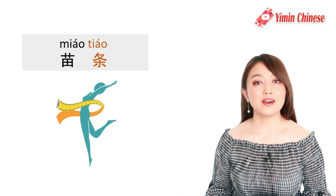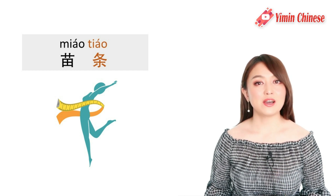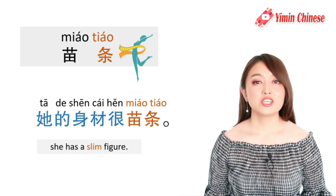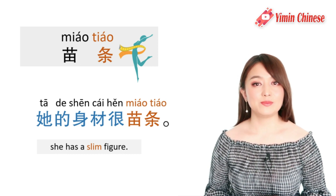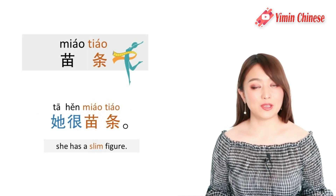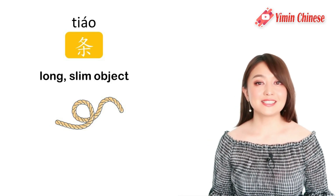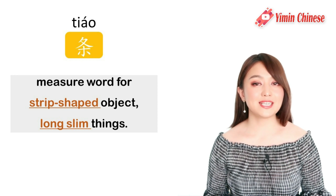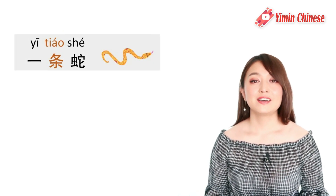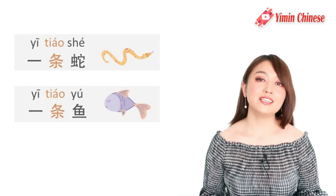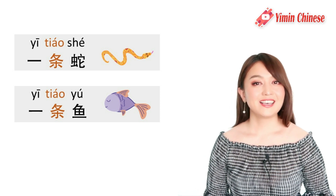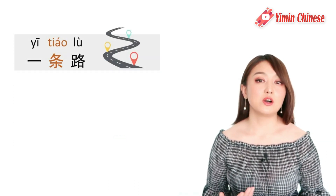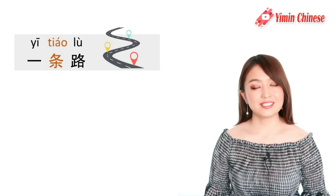And the word 苗条 means 'slim' or 'thin'. For example, 她的身材很苗条 means 'she has a slim figure'. That meaning of 条 — long, slim objects — is why we use it as a measure word for long, slim or strip-shaped objects. Like 一条蛇, a snake; 一条鱼, a fish; 一条河, a river; or 一条路, a road or street.